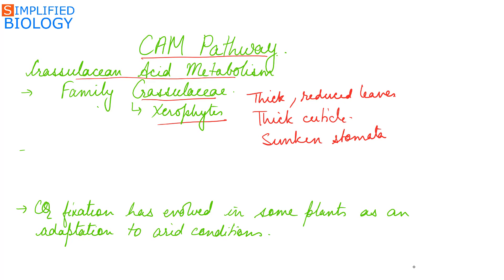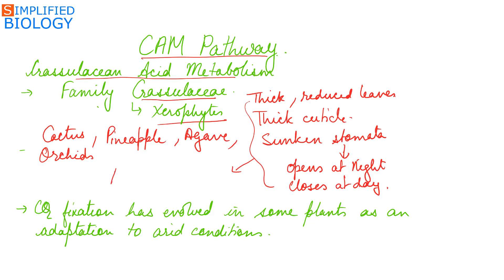The stomata opens at night and closes during day. This pathway is also seen in cactus, pineapple, agave, and orchids. All these characteristics are to reduce the rate of transpiration to prevent loss of water.